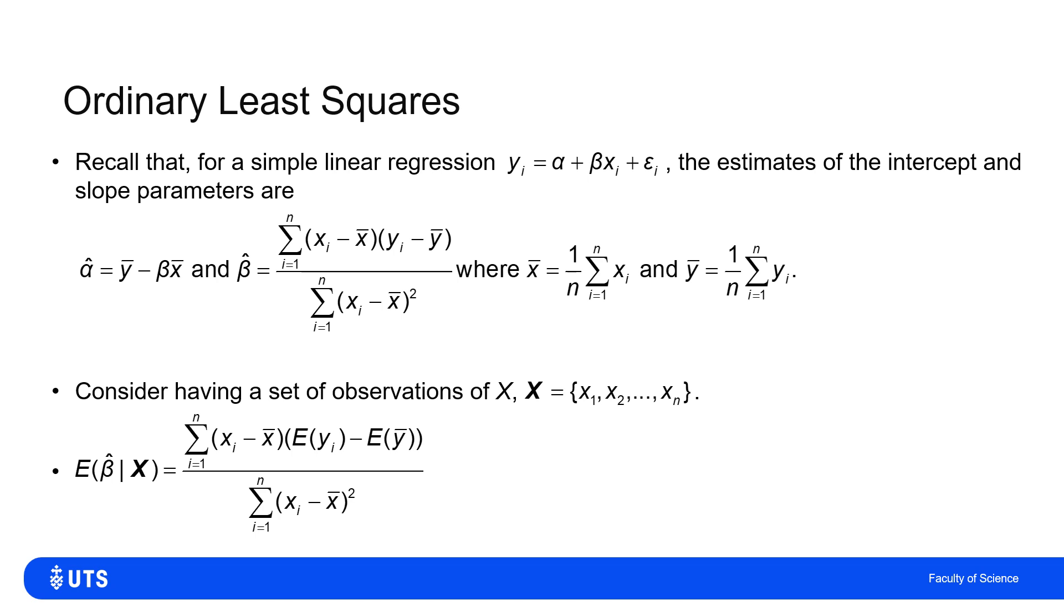then the expected value of this slope parameter β̂ is just, well, the x's I've known, I've observed them, so my term on the top with the (yi - ȳ) just becomes the expected value of yi minus the expected value of ȳ.